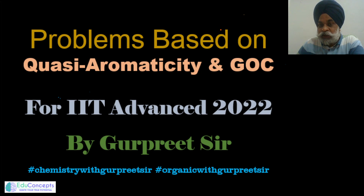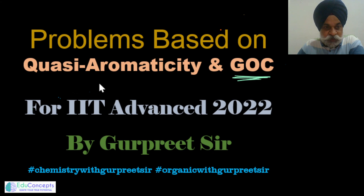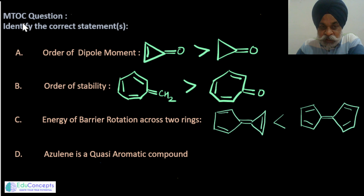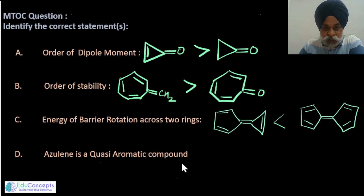Continuing the series on problem solving for upcoming IIT Advanced 2022, here is one more question based on the topic of GOC, where we come across quasi-aromaticity or quasi-aromatic compounds. This is a more than one choice question, a very often asked type in IIT Advanced. You are supposed to determine the order of dipole moment, order of stability, energy of barrier rotation across two rings, and whether azulene is a quasi-aromatic compound.